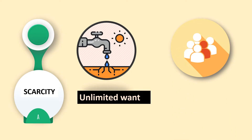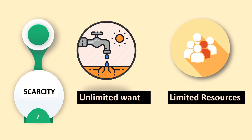Let's start with scarcity. As you know, we have unlimited wants — different people have different tastes and different wants. The want is unlimited, but we have very limited resources. We need to use those limited resources efficiently to gain success and meet our demand properly. Economics teaches us about scarcity and how we can solve it.